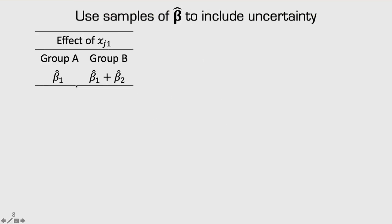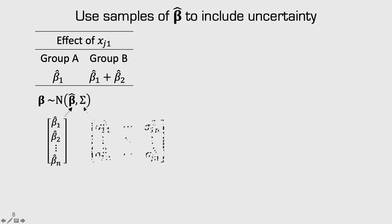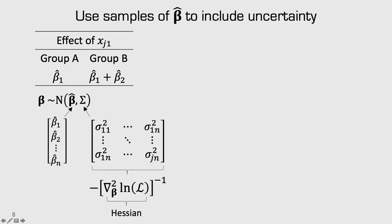Going back to the simpler model showing the effect of x1 between groups A and B: if all we wanted was a point estimate of the difference, we know for group A the coefficient is beta 1, and for group B it's beta 1 plus beta 2. But both these coefficients have uncertainty around them. To compute a confidence interval, we can use simulation — just like when computing willingness to pay or market shares with uncertainty. Our beta coefficients are normally distributed with a mean vector of estimates from the model, and the variance-covariance matrix comes from the negative inverse of the Hessian.